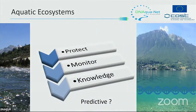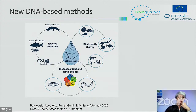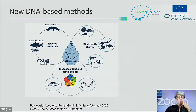To protect aquatic ecosystems we need first to monitor them, and to monitor them we need to rely on good knowledge. The ultimate goal in protection would be to be predictive. For that, as Florian showed, there are new DNA-based methods that can be used for species detection — endangered species, invasive alien species, or parasites — for conservation goals, for biodiversity surveys of different organism groups, and for bioassessment and biotic indices.